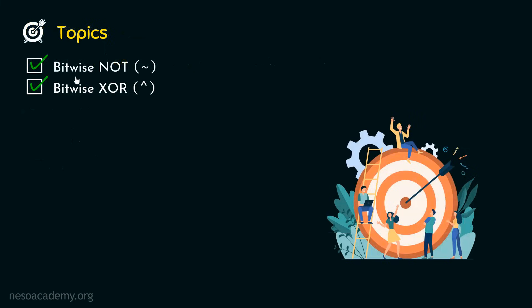We are done with bitwise NOT and bitwise XOR. We covered how bitwise NOT works, the meaning of one's complement, and how the sign bit affects the result. Bitwise XOR differs from OR: with bitwise OR, at least one bit must be 1 to get 1; with bitwise XOR, at most one bit should be 1. Thank you for watching this presentation. I'll see you in the next one.